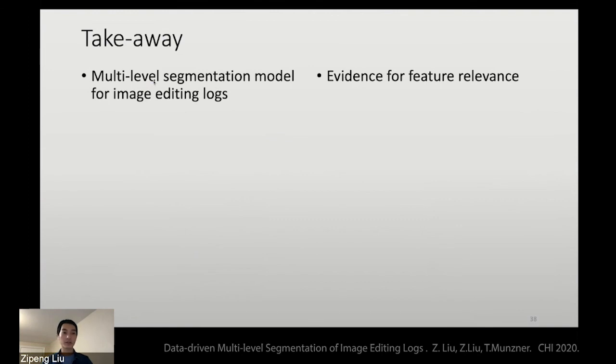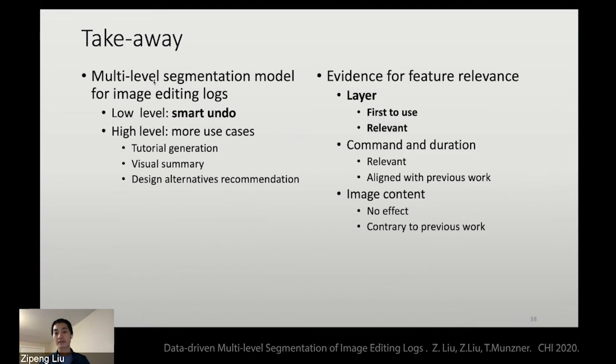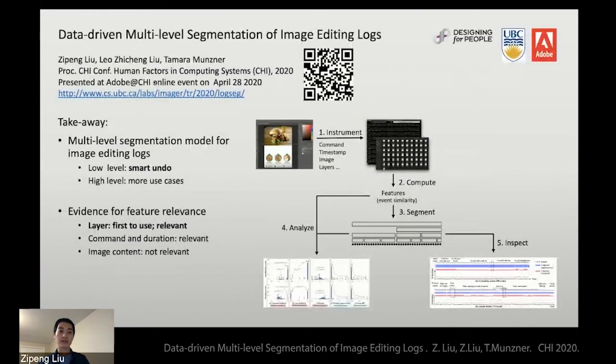To conclude, we contribute a multi-level segmentation model for image editing logs, where the low level is for smart undo, and the high level can be used for more use cases because you get flexibility for granularity, such as automatic generation of tutorials or to get a visual summary of the overall session. We provide evidence for feature relevance. We found that we were the first one to use layers and found that it's super relevant. Command and duration is relevant and aligned with previous work, but image content has no effect in contrary to previous work. You can find more information in this website. Thank you.